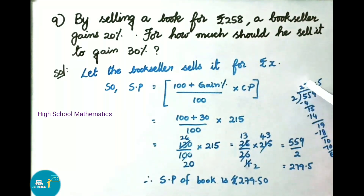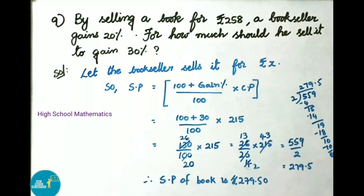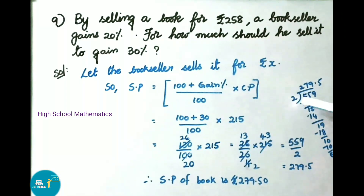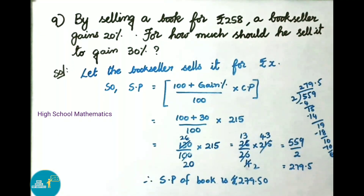Dividing 559 by 2: 2 into 5 gives 2 remainder 1, bring down 5 to get 15; 2 into 15 gives 7 remainder 1, bring down 9 to get 19; 2 into 19 gives 9 remainder 1; add decimal point and zero to get 10; 2 into 10 gives 5 remainder 0. Therefore selling price of book is 279 rupees 50 paise. To get a profit of 30 percent, the shopkeeper must sell the book at 279 rupees 50 paise.